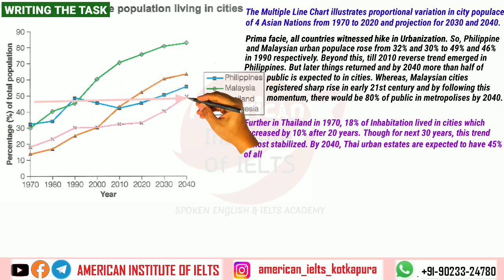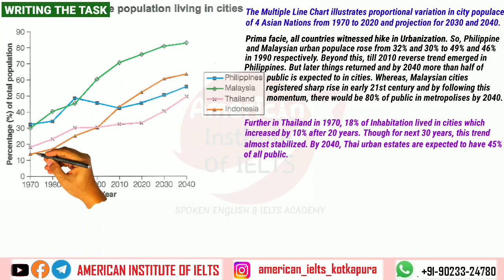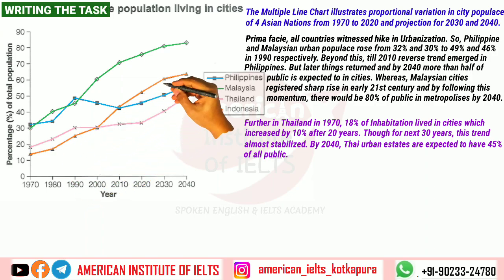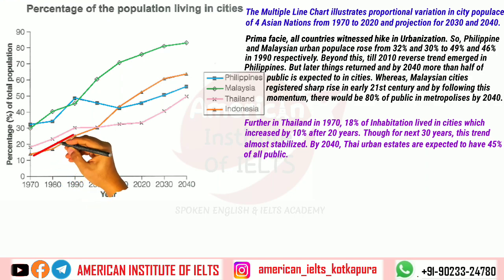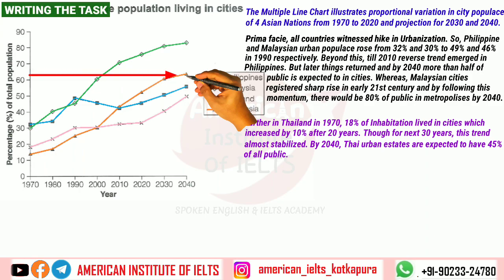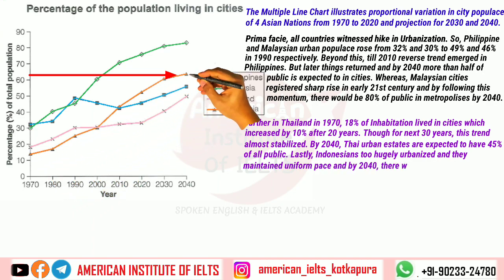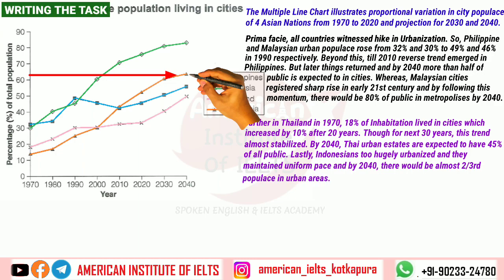Now for Indonesia — Indonesians also hugely urbanized and maintained a uniform pace. By 2040 there would be almost two-thirds of the population in urban areas. With this, we have finished discussing Indonesia as well.